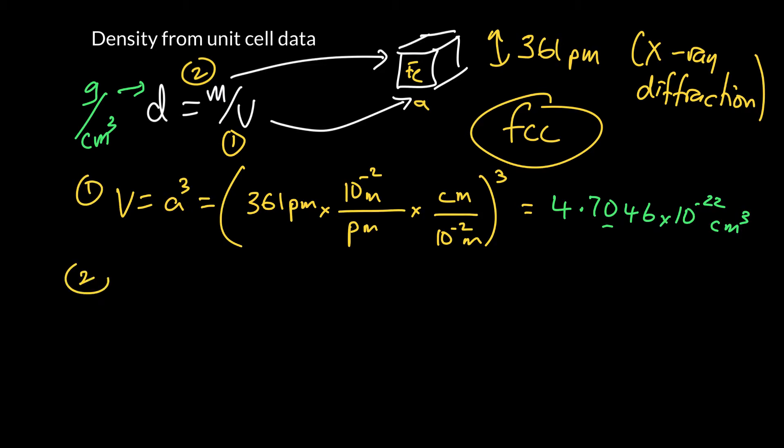And then the next part of the problem is, what is the mass? And we're told it's a face-centered cubic unit cell. So remember for a face-centered cubic unit cell, what you have is an atom at each one of the eight corners. So we've got a hidden corner right here.